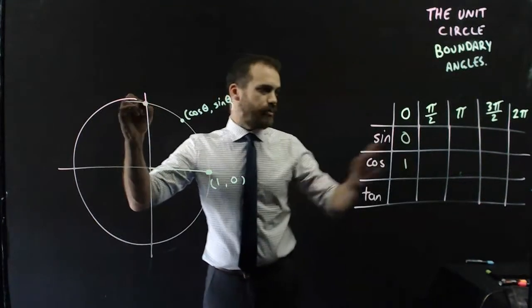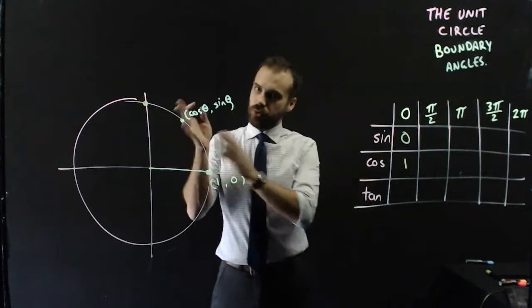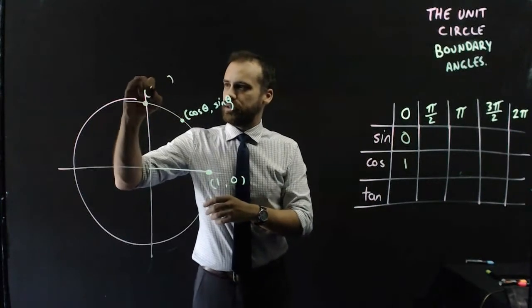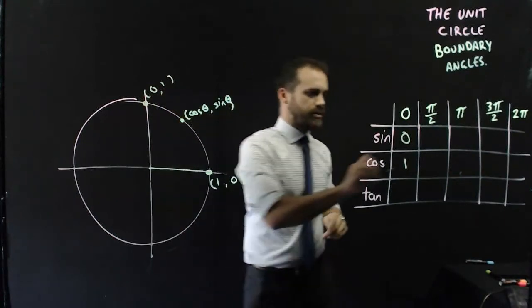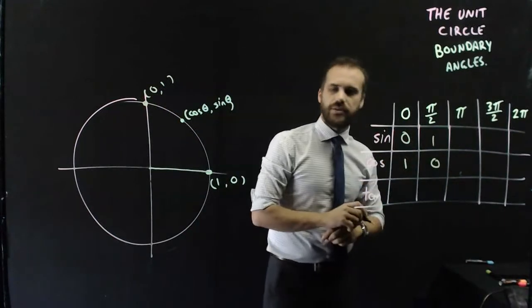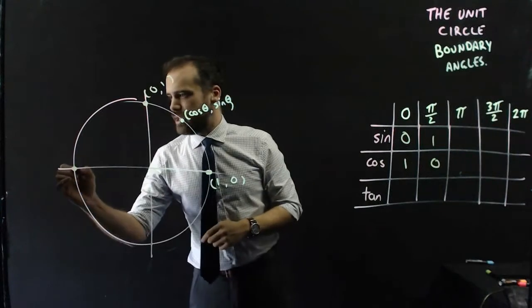If I move the dot up to here, which is pi on 2, the coordinates of that dot now are 0 and 1. Cos theta, sine theta, 0 and 1. If I move over to here now,